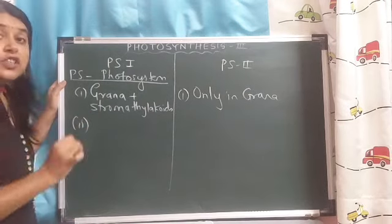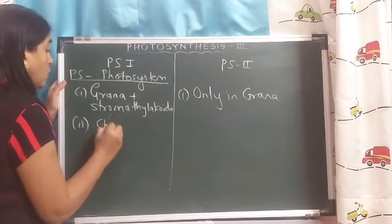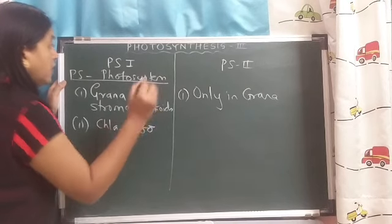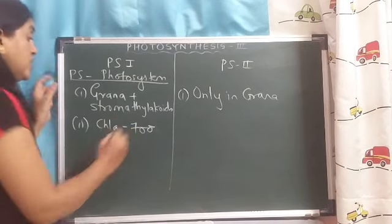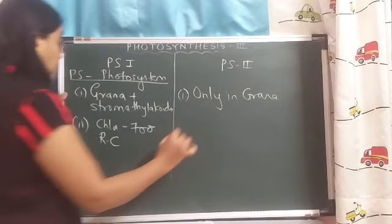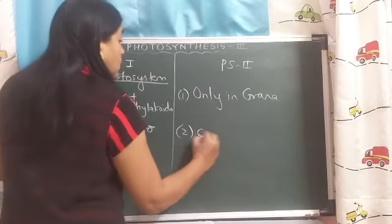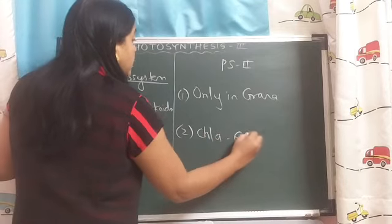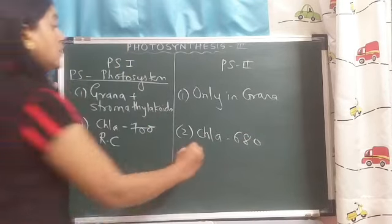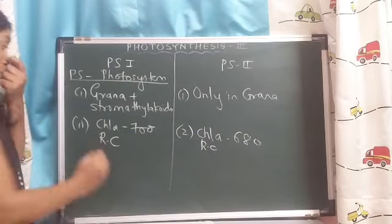What is functioning as the reaction center of PS1? Chlorophyll A 700 functions as the reaction center of photosystem 1. Chlorophyll A 680 functions as the reaction center of photosystem 2.